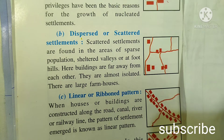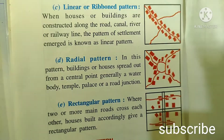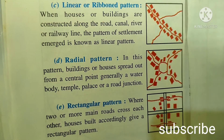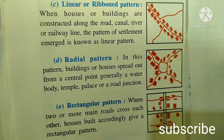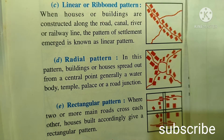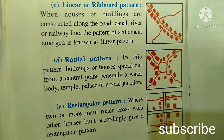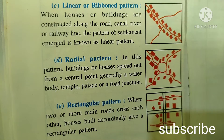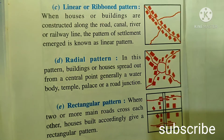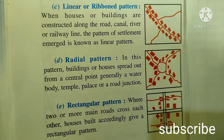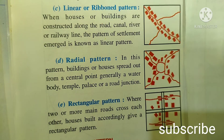a river, or a railway line, the pattern of settlement that emerges is linear pattern. Fourth is radial pattern — in this pattern, buildings or houses spread out from a central point, generally a water body, a temple, a palace, or a road junction, and then spread out in all directions. Fifth is rectangular pattern — where two or more main roads cross each other, houses built accordingly give a rectangular pattern.